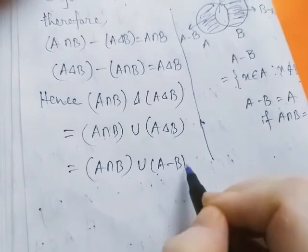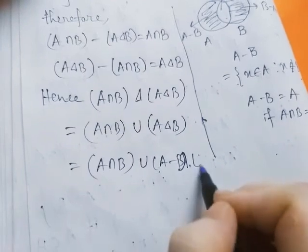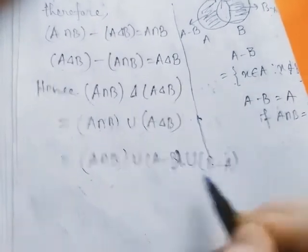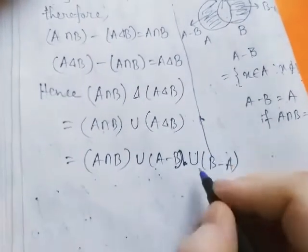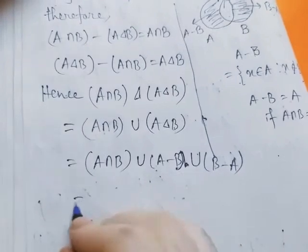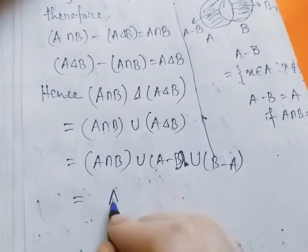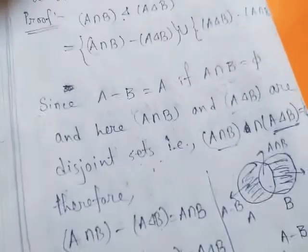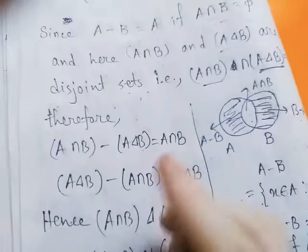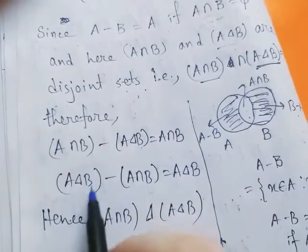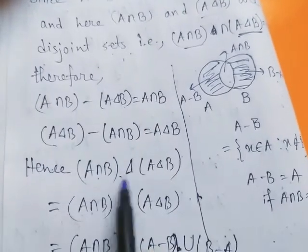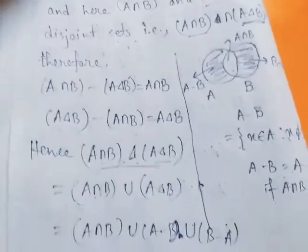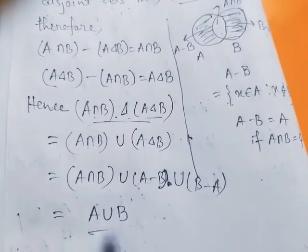That is A intersection B union A minus B union B minus A, which simplifies to simply A union B. So it is proved that A intersection B delta A delta B equals A union B.